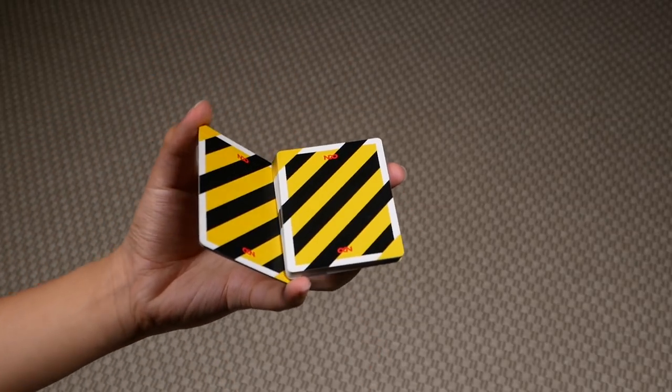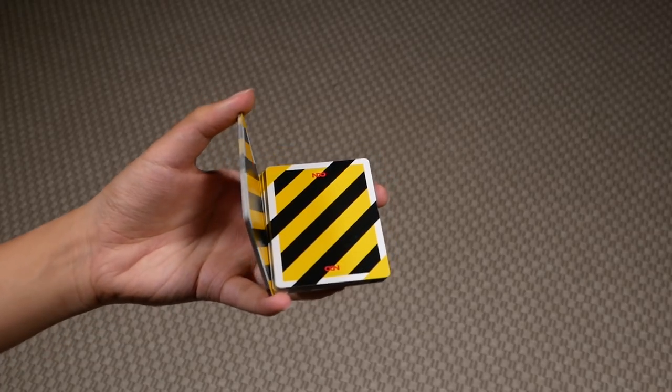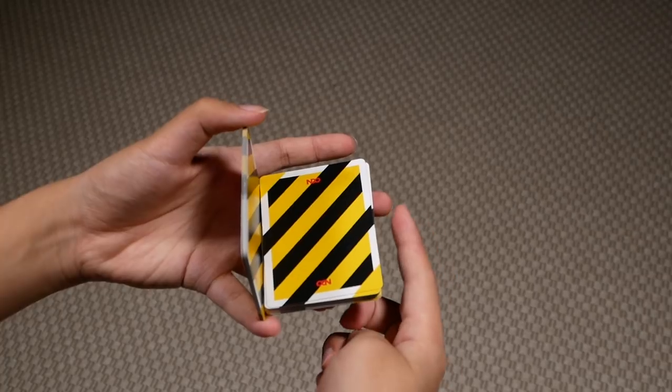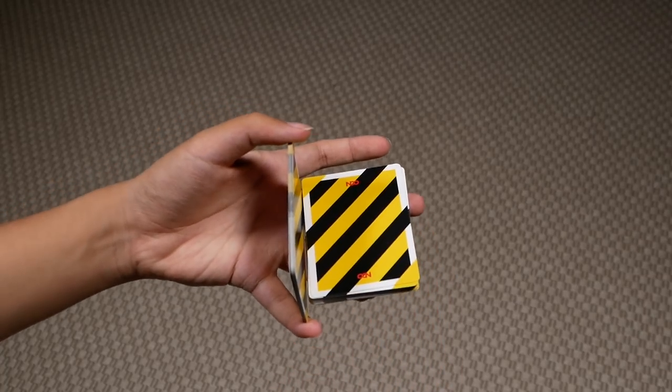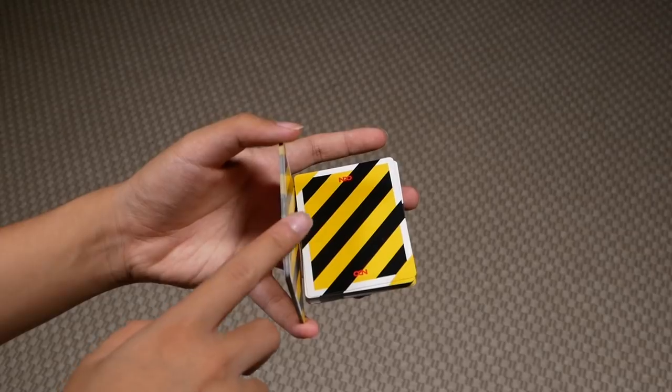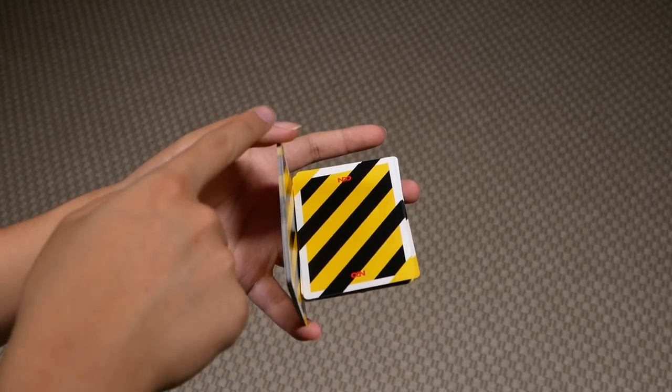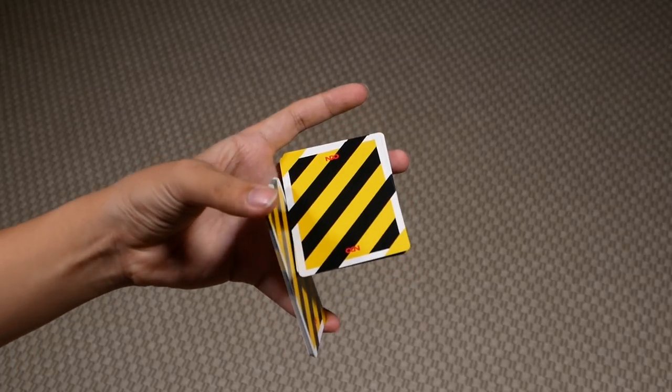Alright, so you should be able to reach this point where this top packet slides downwards until it fully rests on your middle finger and your ring finger at the bottom here. Then what you're going to do is you're going to slide this packet back under it, under this top packet here by pushing downwards with your thumb like so.